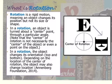Alrighty then, so rotation is a rigid motion, meaning an object changes its position but not its size or shape. In rotation, an object is turned about a center point. The center of the rotation is not necessarily the center of the object, or even a point on the object. In rotation, the object changes its orientation, top and bottom, depending on the location of the center. The object may also change location.